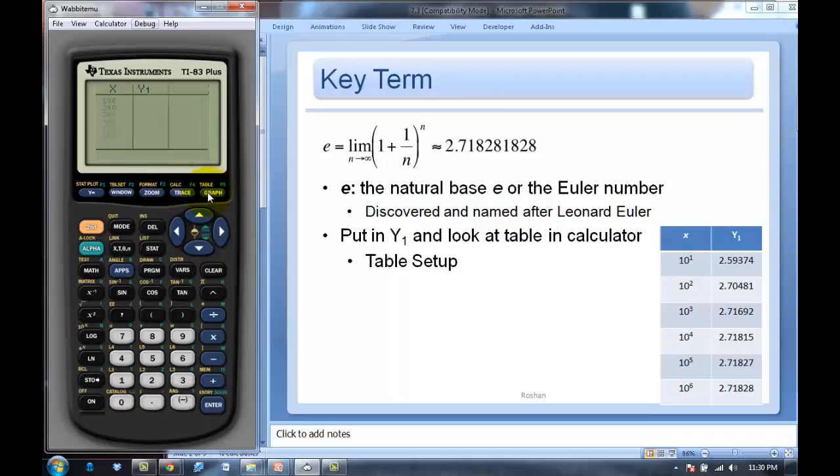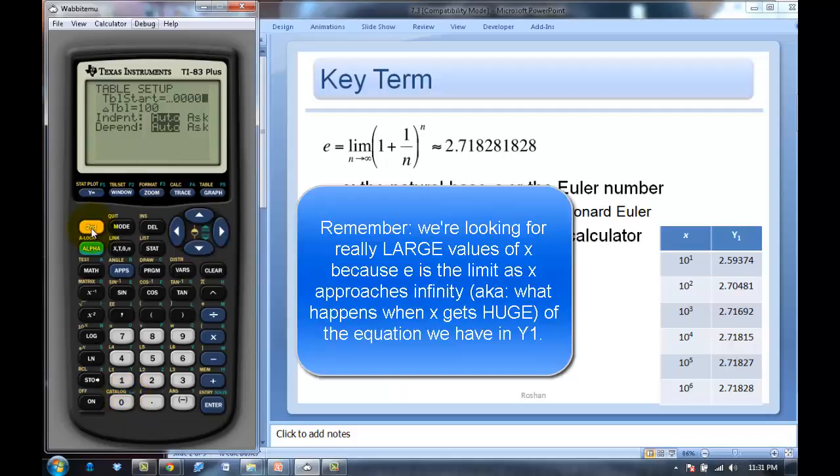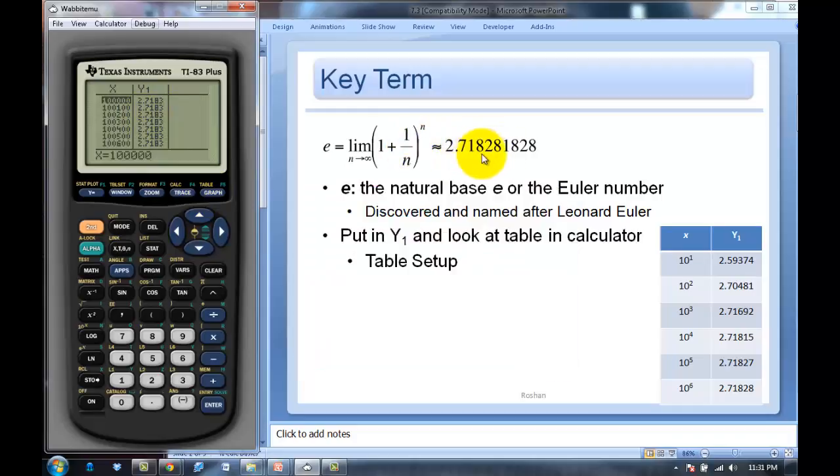Now when I go to second table, you'll see that I started at 100 and I'm going by hundreds. You'll see that my number is getting closer and closer to what I told you it was. Let's go a lot further down. It's getting closer but still not that close. So why don't we go to table set and make it like 100,000. Now you'll see it is converging to that number that I told you that it would.